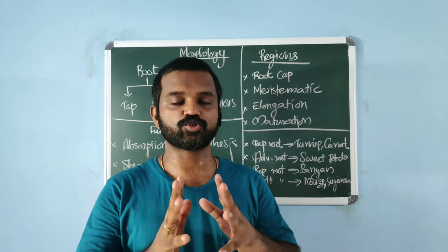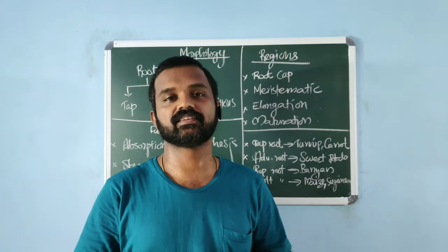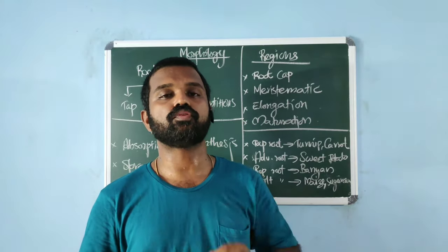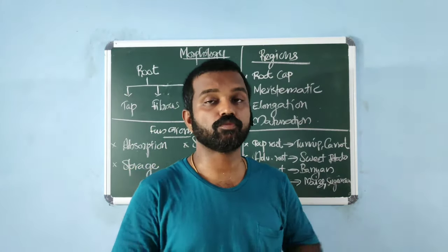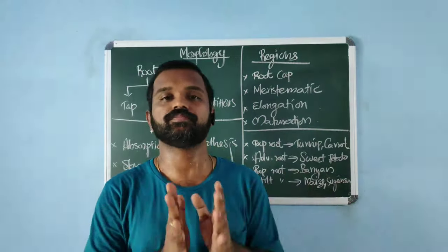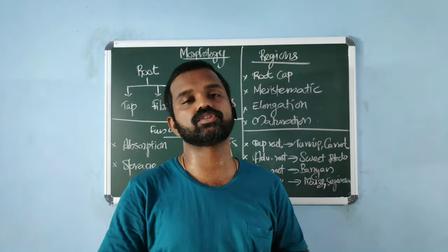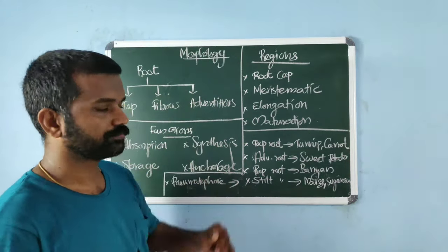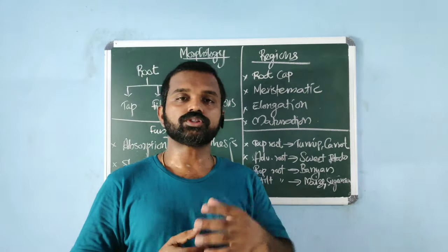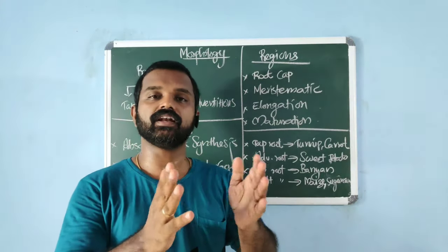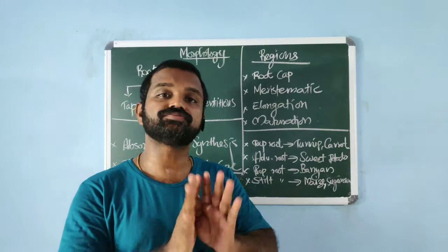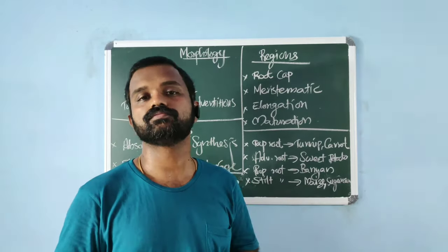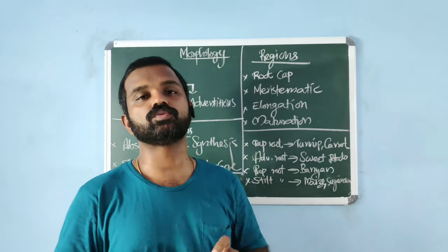Welcome to Smart Locusts. In this video we'll cover the chapter on morphology of flowering plants. Morphology means the external features of a plant. First, about roots: roots are fundamentally of three types — tap root system, fibrous root system, and adventitious root system.